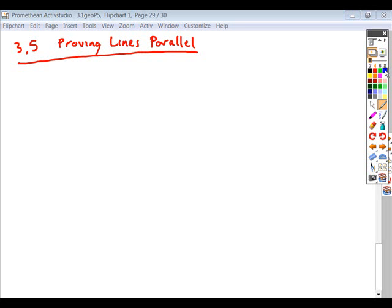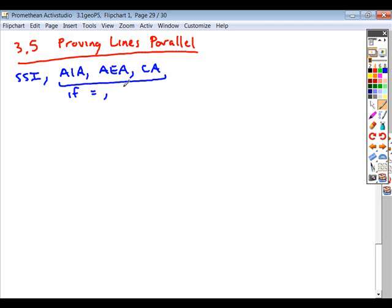As far as what we covered in the first part of this section, we talked about the different ways of proving lines parallel. We talked about SSI, AIA, AEA, and CA. And for all of these last ones, if these are equal, then the lines are parallel.